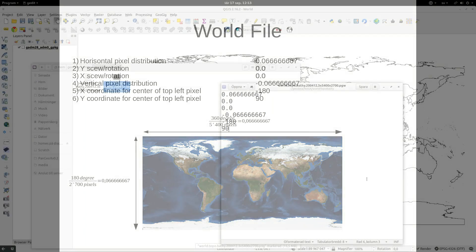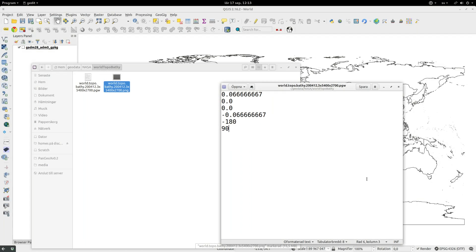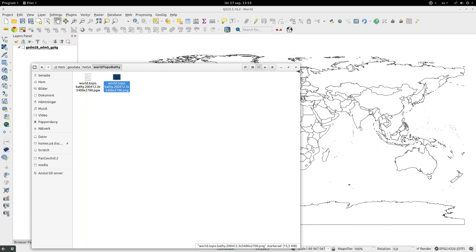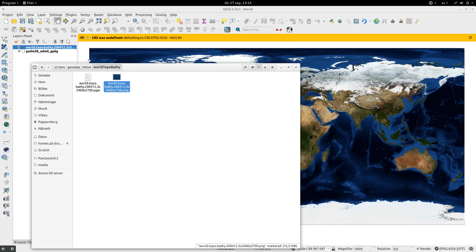The file should be named the same as the raster file, but with a different extension. For a JPEG this extension is JPW and for a PNG it's PGW. As long as the file is stored at the same location as the raster file, any GIS will recognize it and place the raster file accordingly.